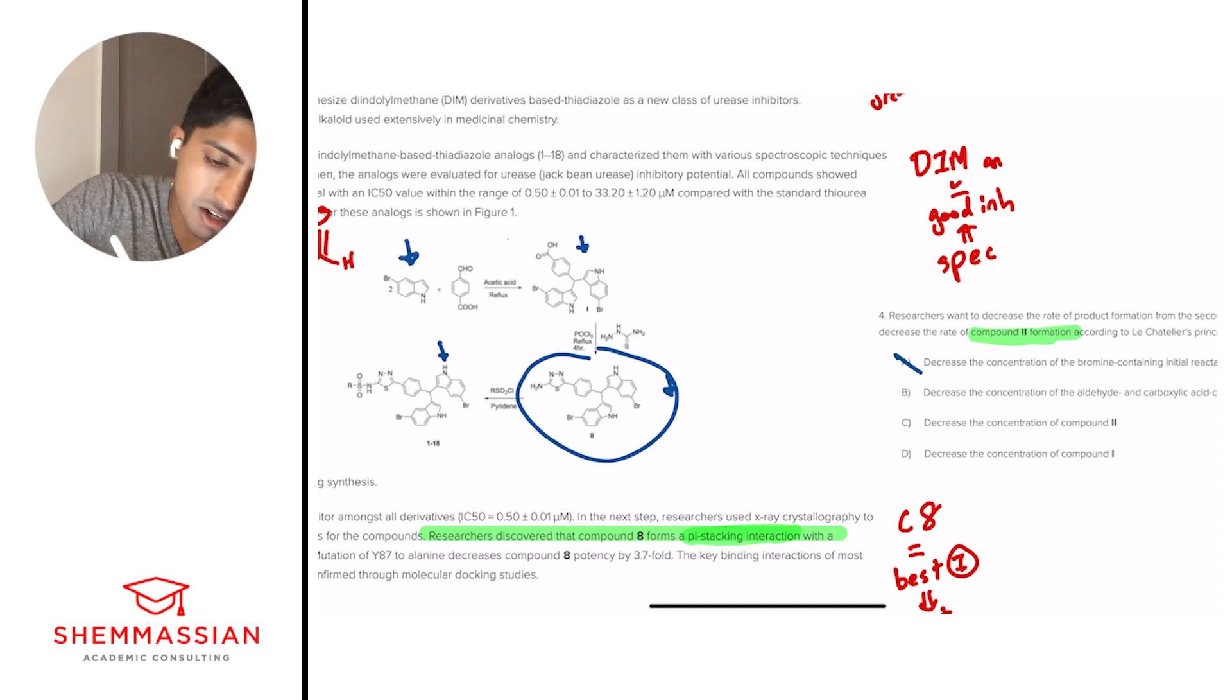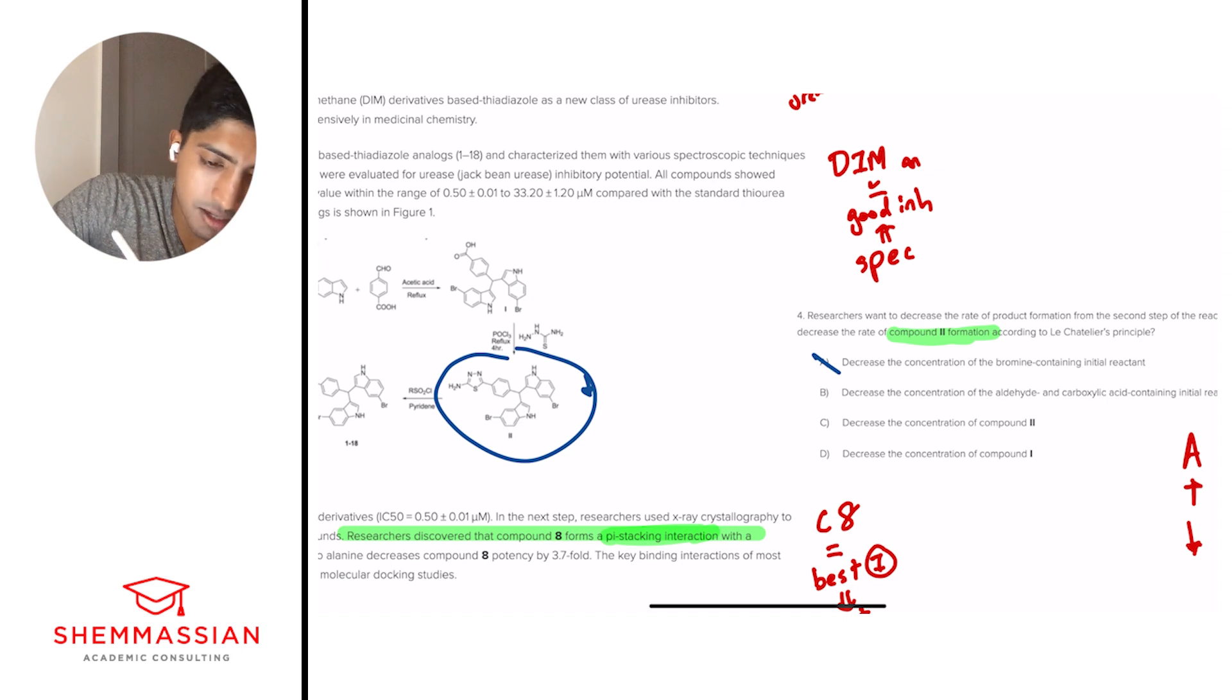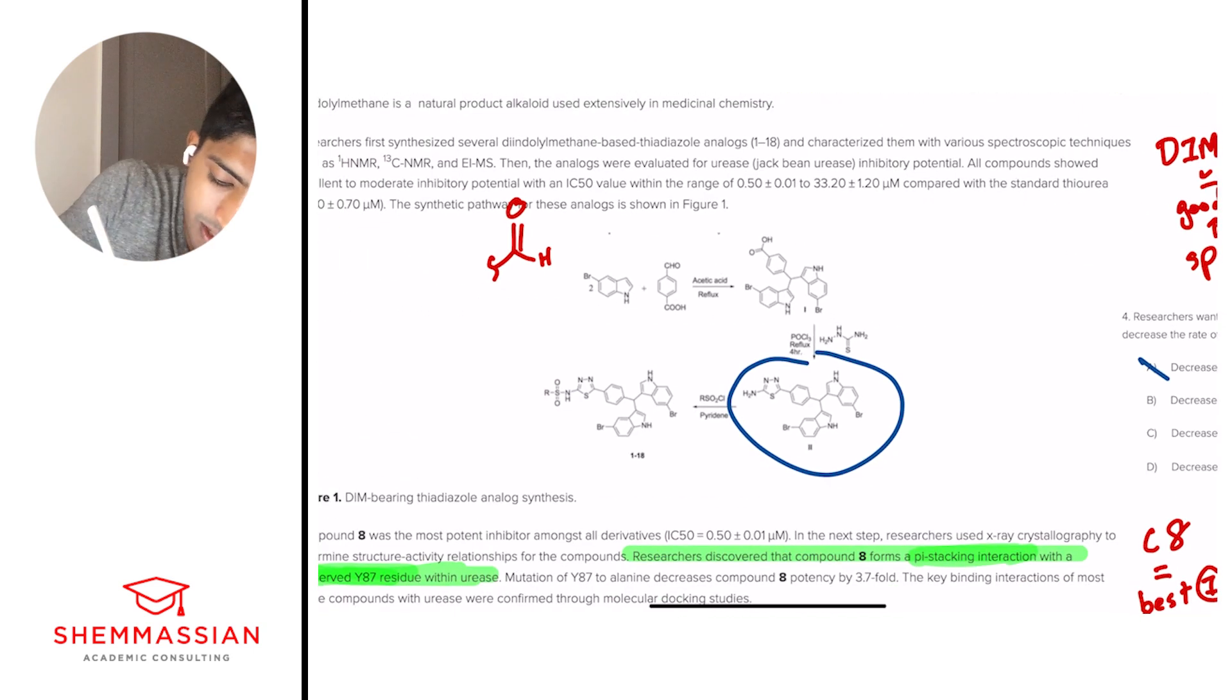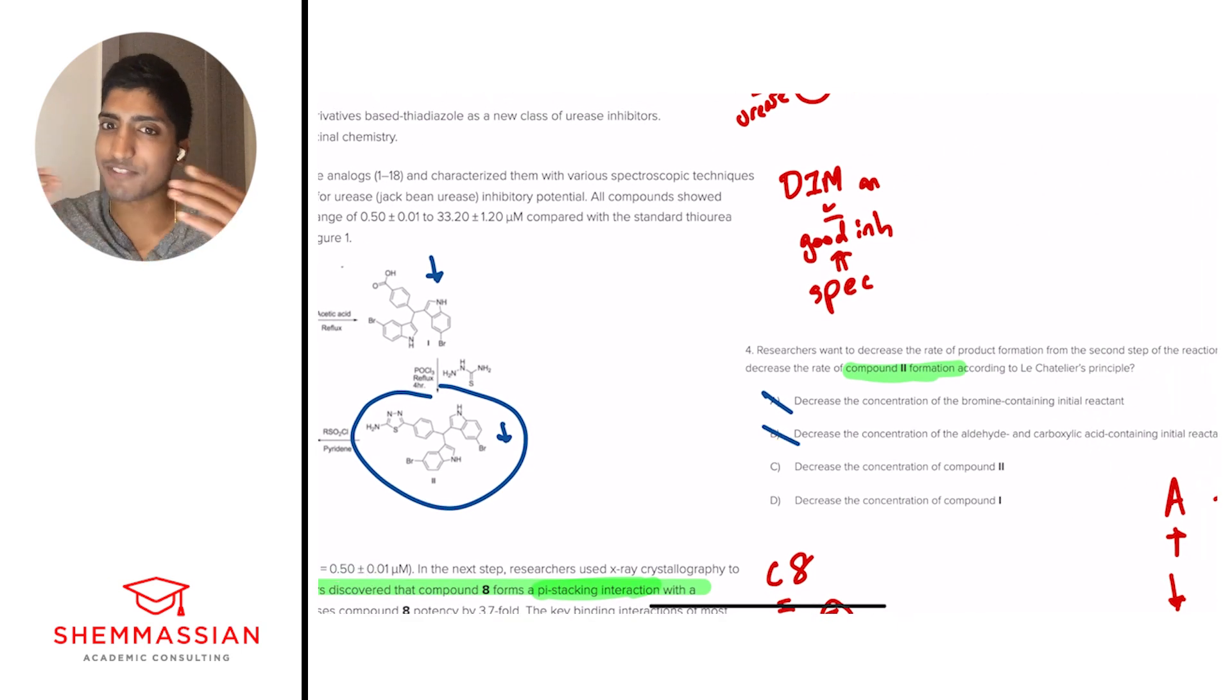And we start over with our arrow trends again. Decrease the concentration of the aldehyde and carboxylic acid-containing initial reactant. Well, it's the same exact idea. This is this reactant. If we decrease this, we're going to decrease this, we're going to decrease this, and decrease this. So that means we can eliminate B, because again, we see our trend of arrows resulting in a decrease amount of product 2.